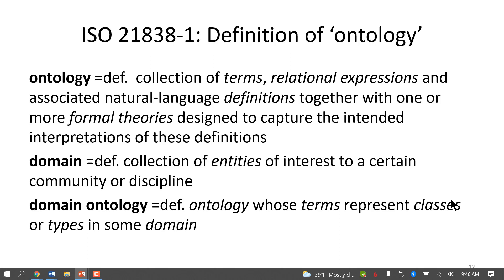So an ontology is defined as a collection of terms, relational expressions, and natural language definitions together with — and this is where the OWL issue comes in — one or more formal theories designed to capture the definitions as closely as possible. The idea is that ontologies should be useful not only for computers but also for human beings.